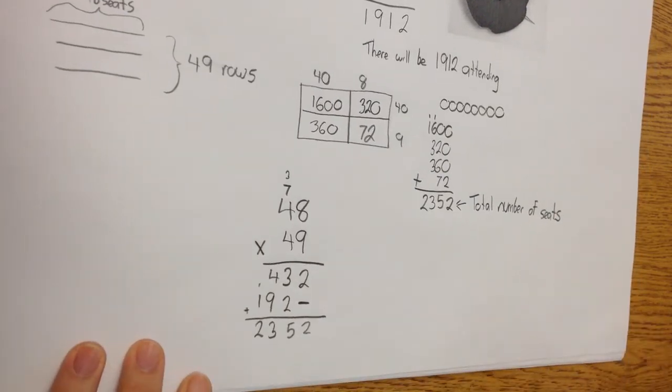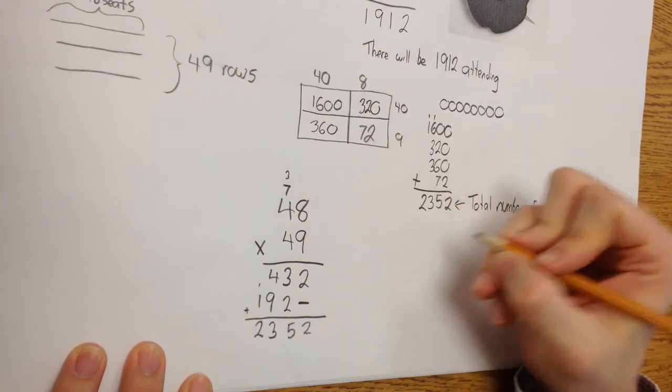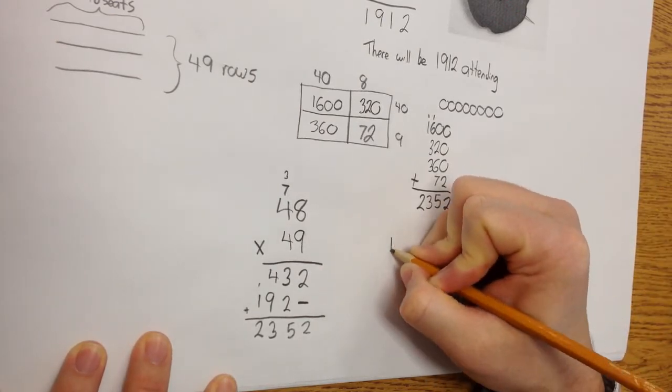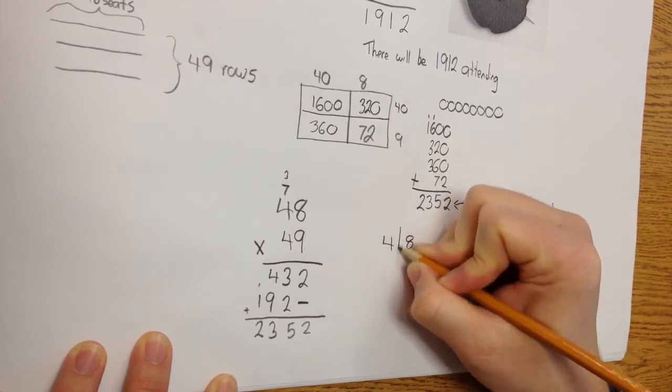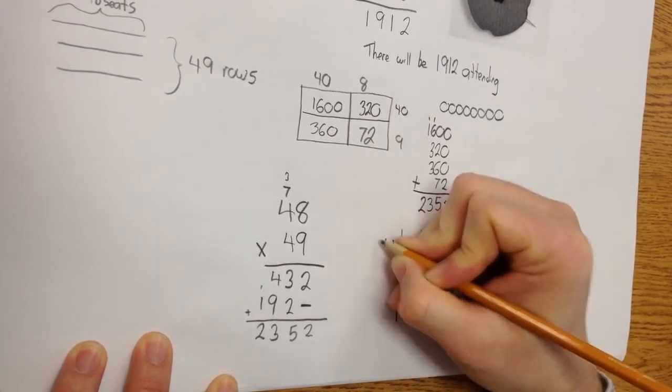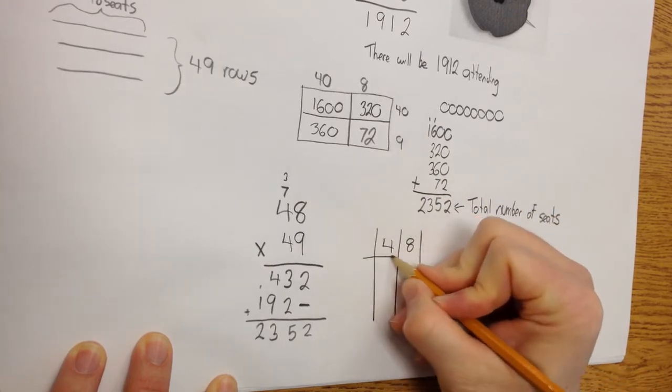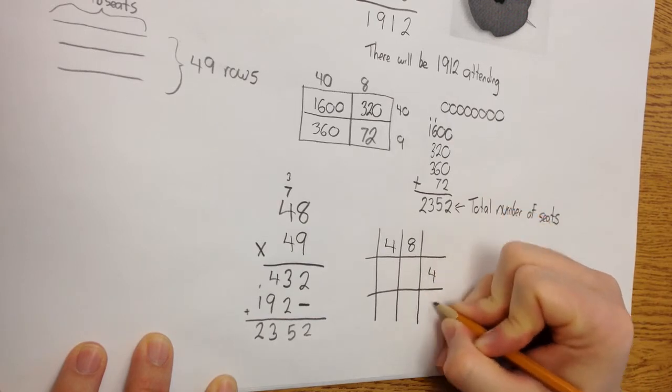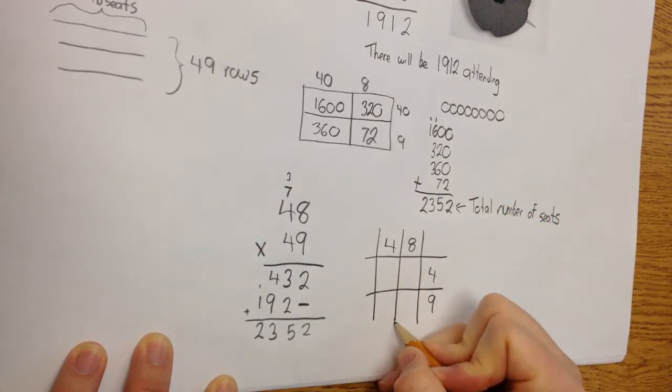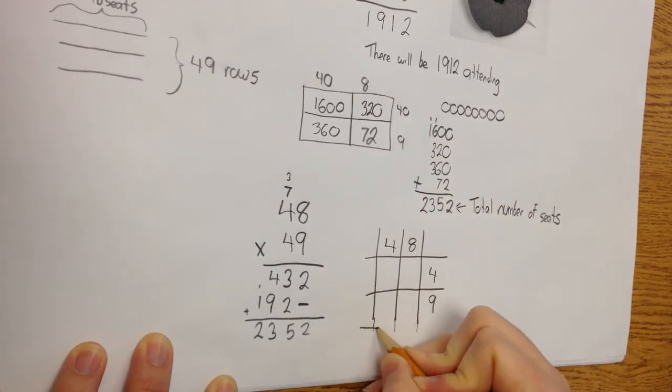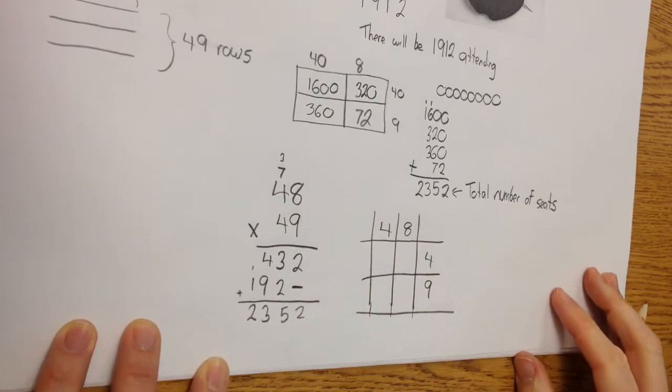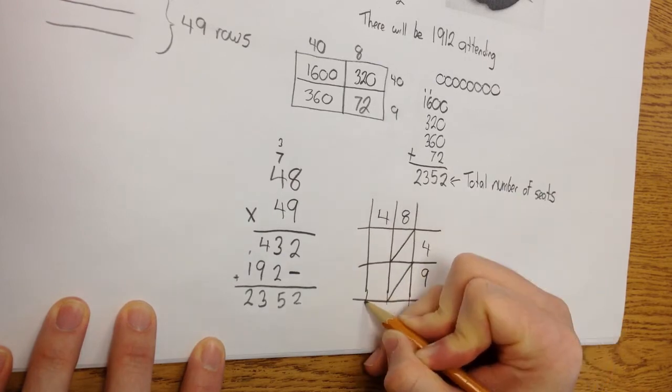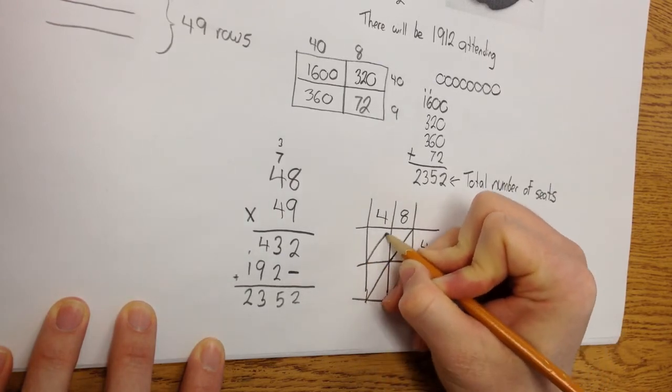And I'm going to use the lattice way. So if I'm doing the lattice way, I'm going to have a 40 and an 8. And then over here, I'm going to have 40 and 9. Everything in the box there. We're good. And then I'm going to divide each of these boxes in half. All right.